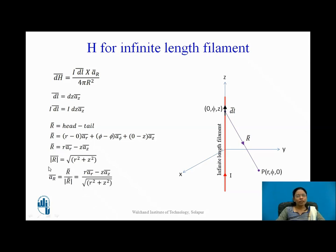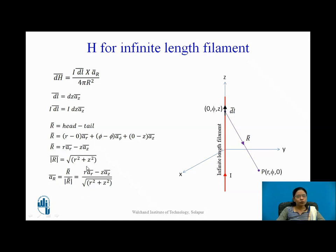AR bar can be given as the vector R bar divided by its magnitude. The vector is R AR bar minus Z AZ bar, and the magnitude is under root of R square plus Z square. So now I have found DL bar, AR bar, and R. My job is to substitute all of these into the equation for DH bar.